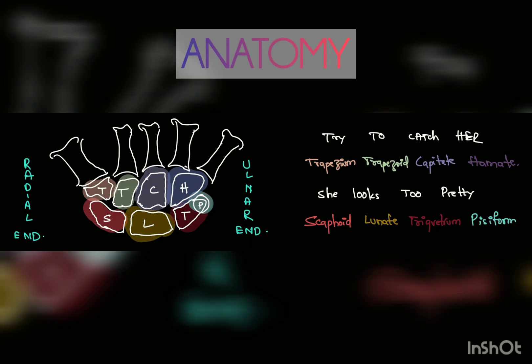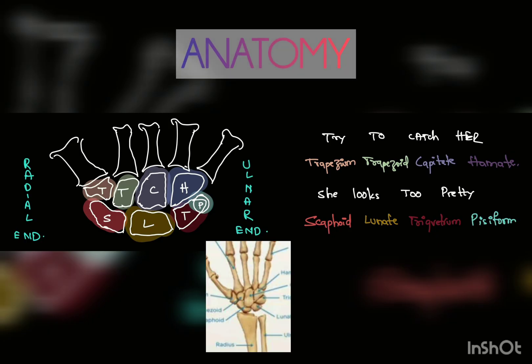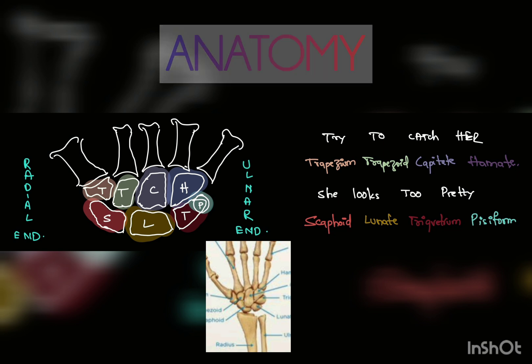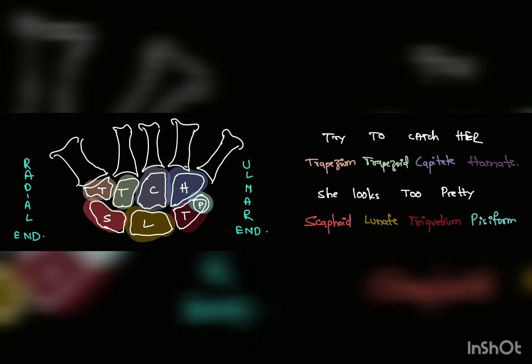Let's briefly cover the anatomy, which allows for a better understanding of carpal tunnel syndrome. The wrist contains eight carpal bones, which allow for articulation between the distal radio-ulnar joint and the metacarpal bones, forming a highly mobile condyloid joint.